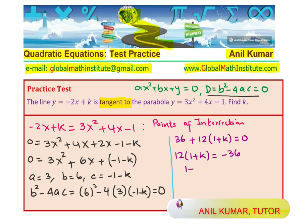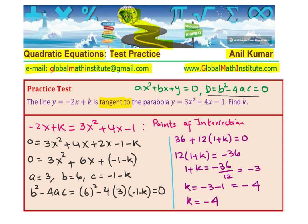Divide by 12, we get 1 + k equals to -36 by 12, which is -3. And so the value of k is -3 - 1, which is -4. So we have got the value of k as equal to -4.